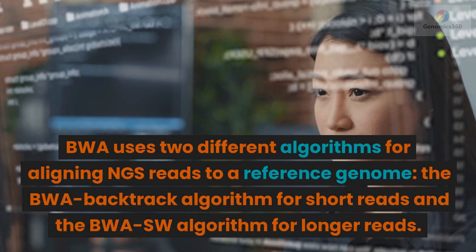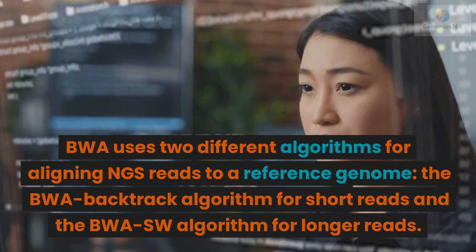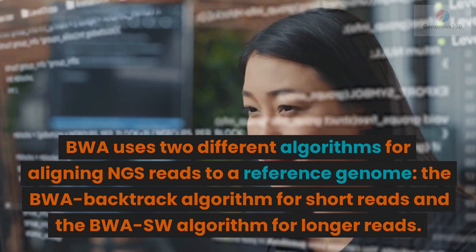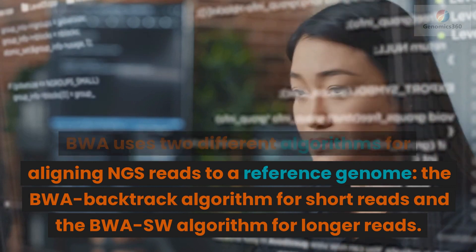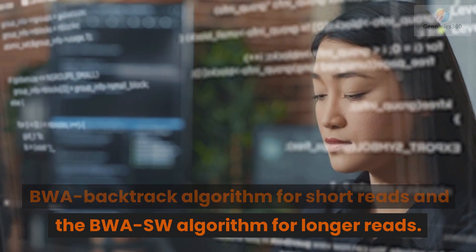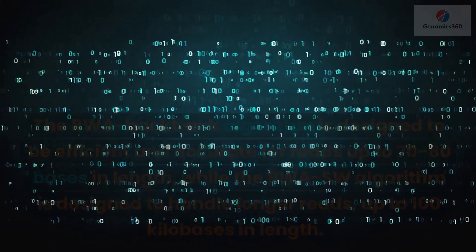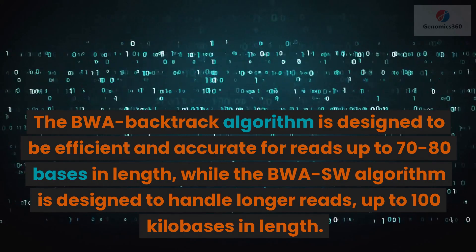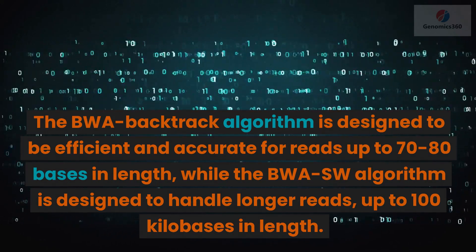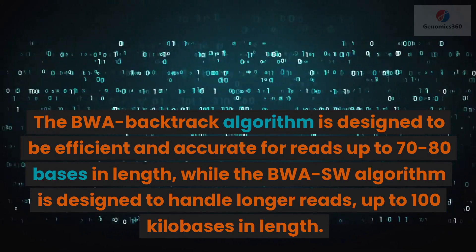BWA uses two different algorithms for aligning NGS reads to a reference genome: the BWA Backtrack algorithm for short reads and the BWASW algorithm for longer reads. The BWA Backtrack algorithm is designed to be efficient and accurate for reads up to 70 to 80 bases in length.